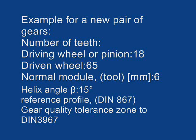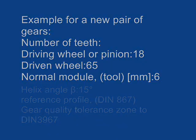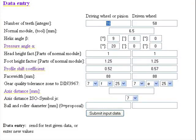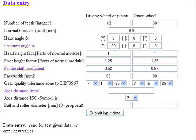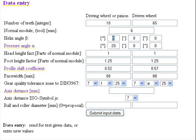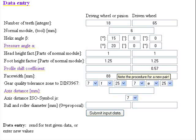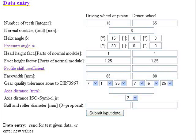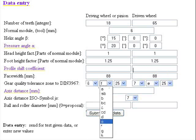Gear quality tolerance zone to DIN 3967. Enter driving wheel or pinion, driven wheel, normal module, and helix angle. Leave the input fields for profile shift factors and center distance blank for so-called zero wheels with zero distance. Gear quality tolerance zone to DIN 3967.